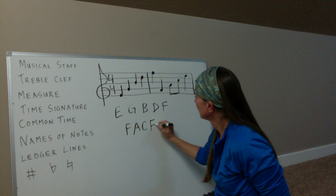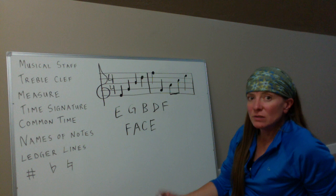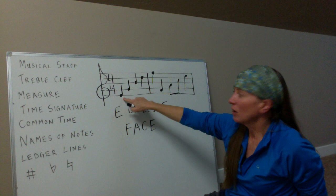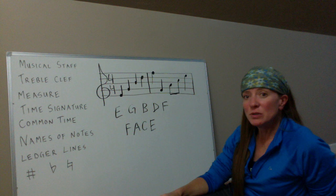If you ever get confused about what note something is, all you have to do is go up or down the alphabet from a note you know. The musical alphabet is A, B, C, D, E, F, G — and that's it. Once you get to G, you start over again back at A.